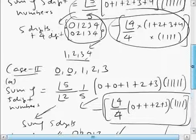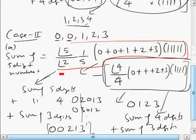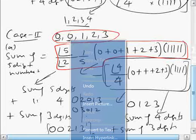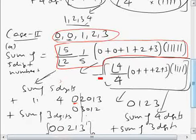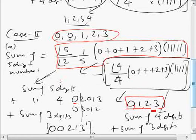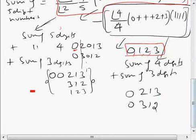So for Case 2 part A: the full expression is (sum of 5-digit + 4-digit + 3-digit) minus (sum of 4-digit + 3-digit) = sum of five-digit numbers only. The difference cleanly isolates the five-digit sum. You can repeat this same idea for Case 2 parts B, C, and D, choosing different sets of three non-zero digits each time and summing all contributions at the end.